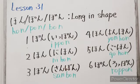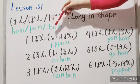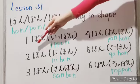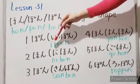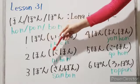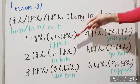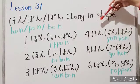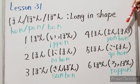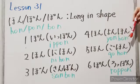Let's practice it. One — ippon. Two — nihon. Three — sanbon. Four — yonhon. Five — gohon.